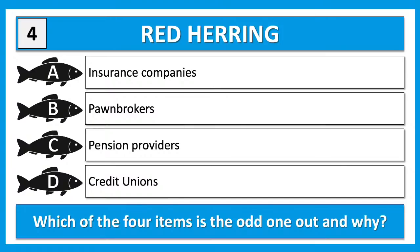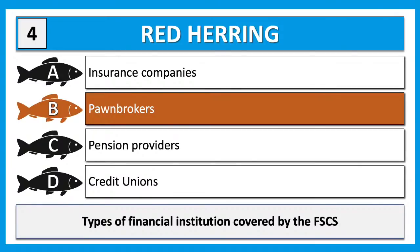Next red herring: A) insurance companies, B) pawnbrokers, C) pension providers, D) credit unions — which one is the odd one out and why? The answer is B — pawnbrokers. These are types of financial institution covered by the FSCS. This one was trickier, but it comes up in your exam about consumer protection. Pawnbrokers are not covered by the FSCS.